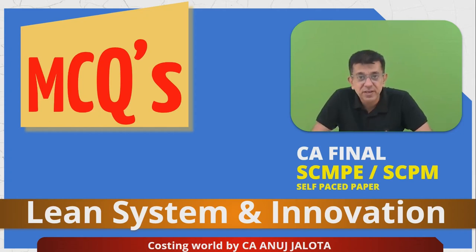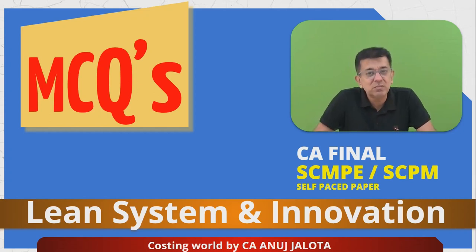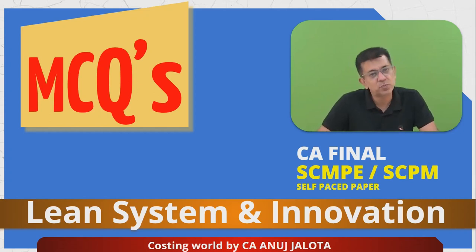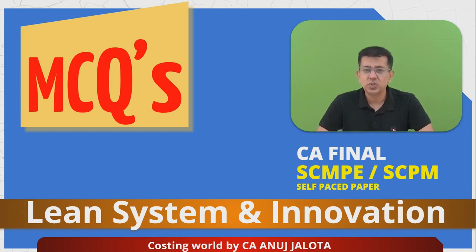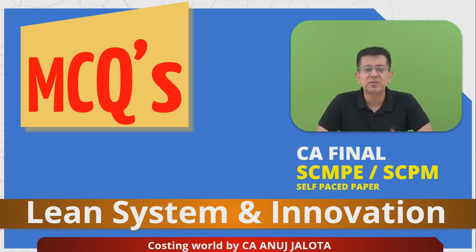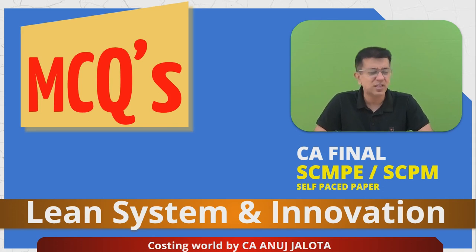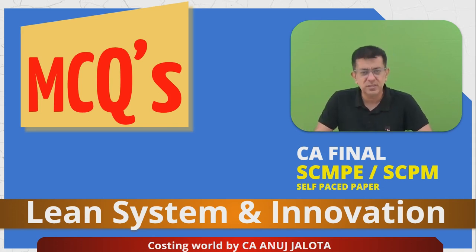Hi guys, welcome to CA Final SCMPE or SCPM self-paced paper. We are doing chapter number three: lean systems and innovations, which teaches you basically how to avoid wastages in your organization. There are a lot of techniques for that — 5S is there, then you have Kaizen costing, total productive maintenance, and so on.